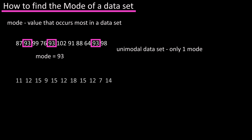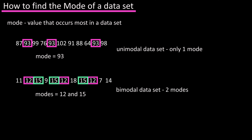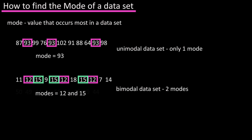In this data set, 12 occurs three times and 15 also occurs three times, so this data set is bimodal.